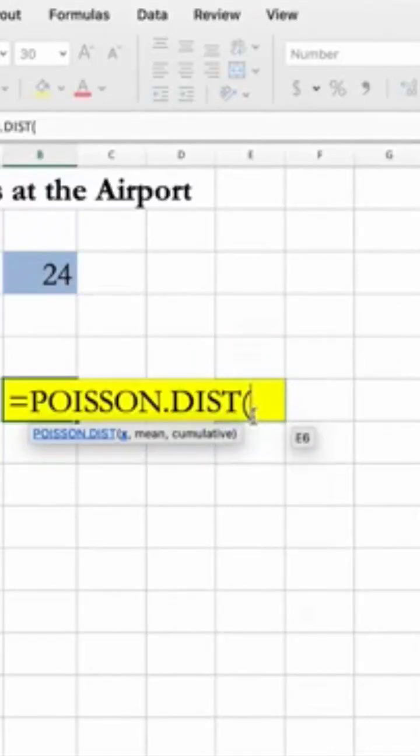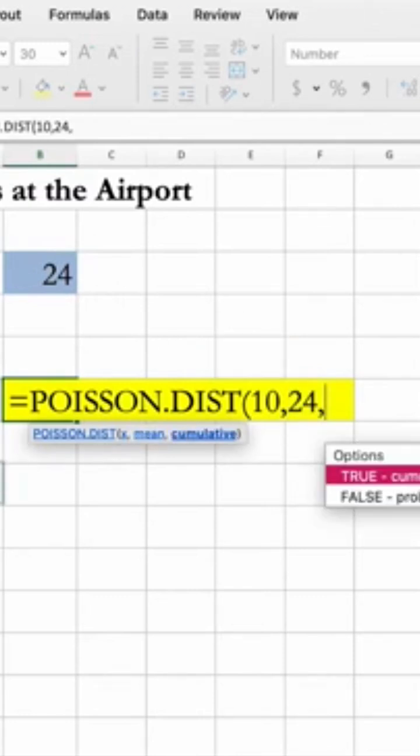Open the Poisson distribution. The first argument asks you for the x value. The x value is the number in your question, here it is 10. The mean as per our question is 24.